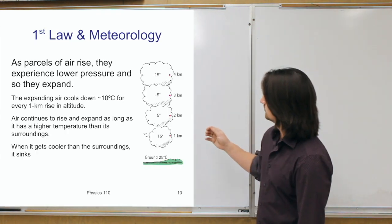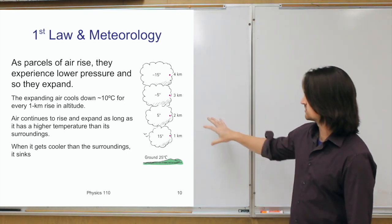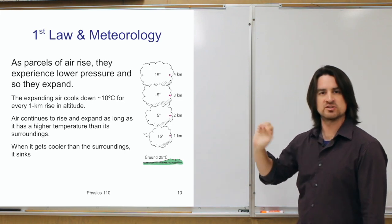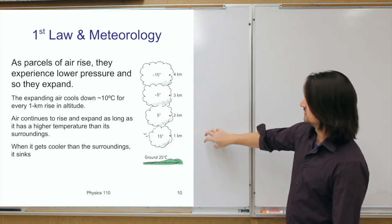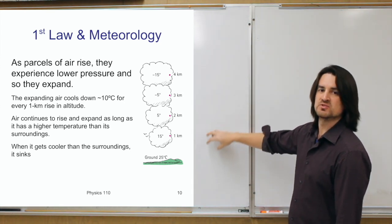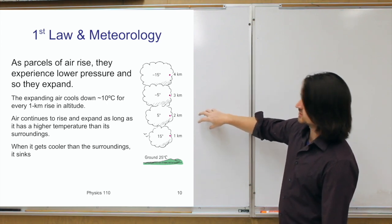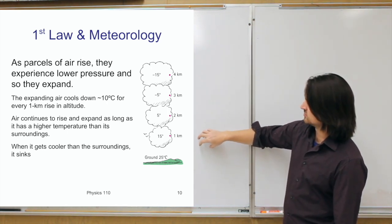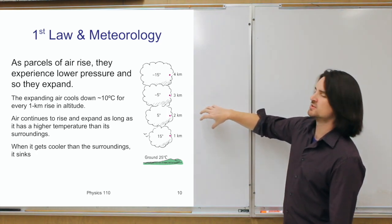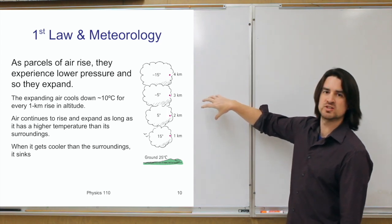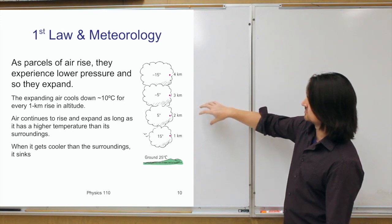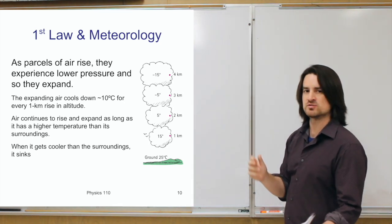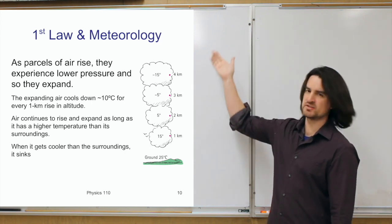Here's a picture of that. A parcel of air sitting about one kilometer above ground level at 15°C — that parcel is warmer and less dense than the surrounding air, so it wants to rise. As it rises, the pressure decreases, because pressure decreases as you go higher in the atmosphere. So the parcel expands and its temperature drops. As it continues rising, the pressure around it gets less and less, and the temperature of that parcel keeps decreasing — getting cooler and cooler as it moves up in the atmosphere.